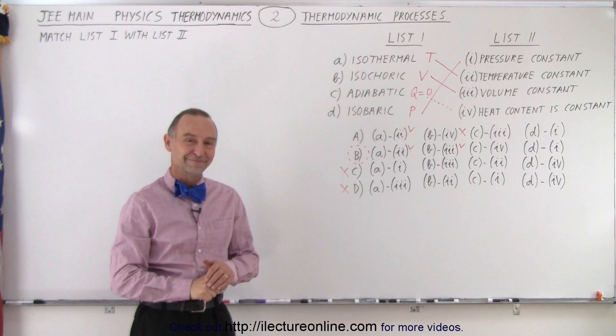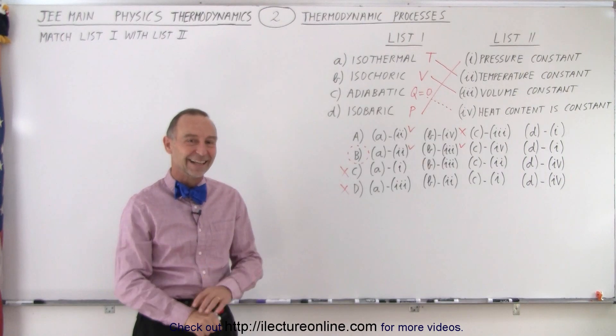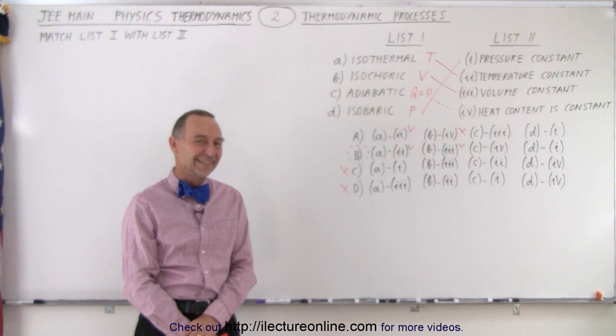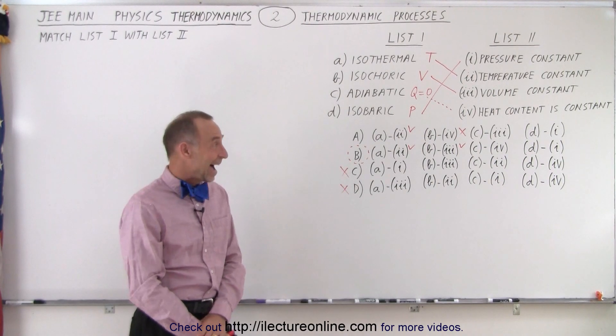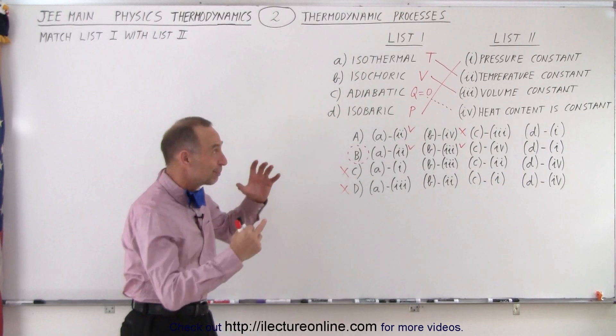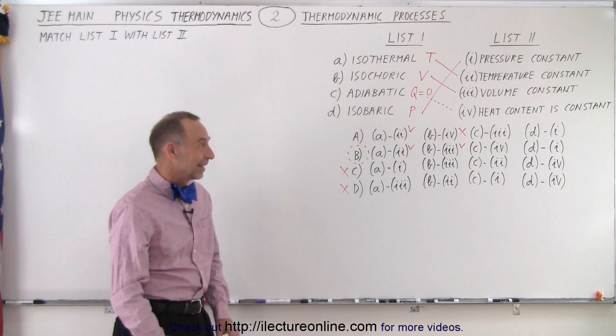Do you think they did that weird notation, A, B, C, D, and then lowercase, you know, roman numeral on purpose? I think it was done on purpose. I think it was done to confuse people. I'm looking at it like, wow.